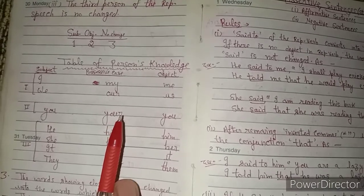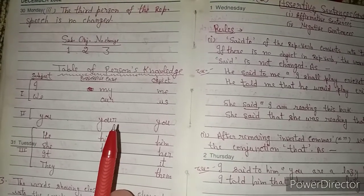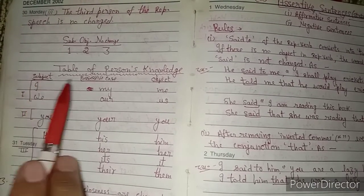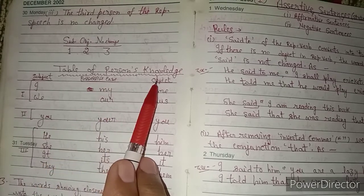Now let's look at the table of persons so you don't have any problem. The table shows subject, possessive case, and object for each person.